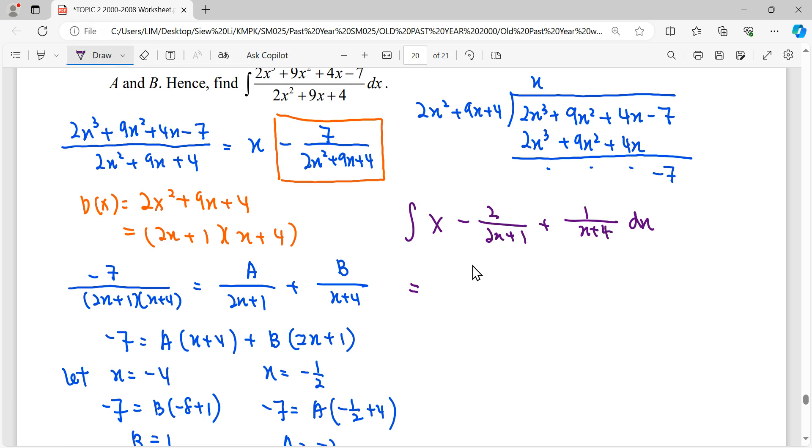So to integrate this, x can be power plus 1 over new power. For this fraction, the constant negative 2 we take up. So constant negative 2 we take up, 1 over linear.